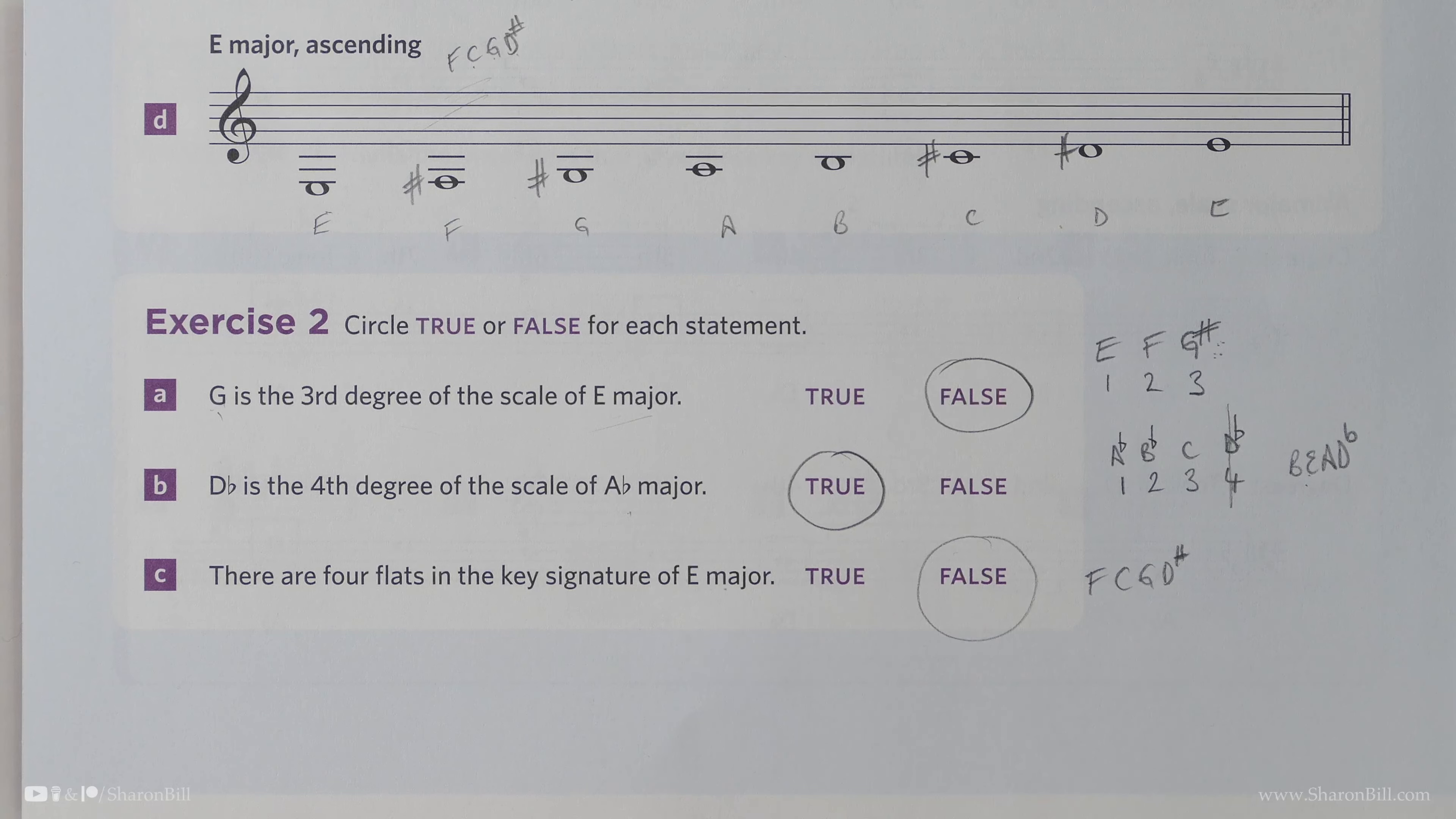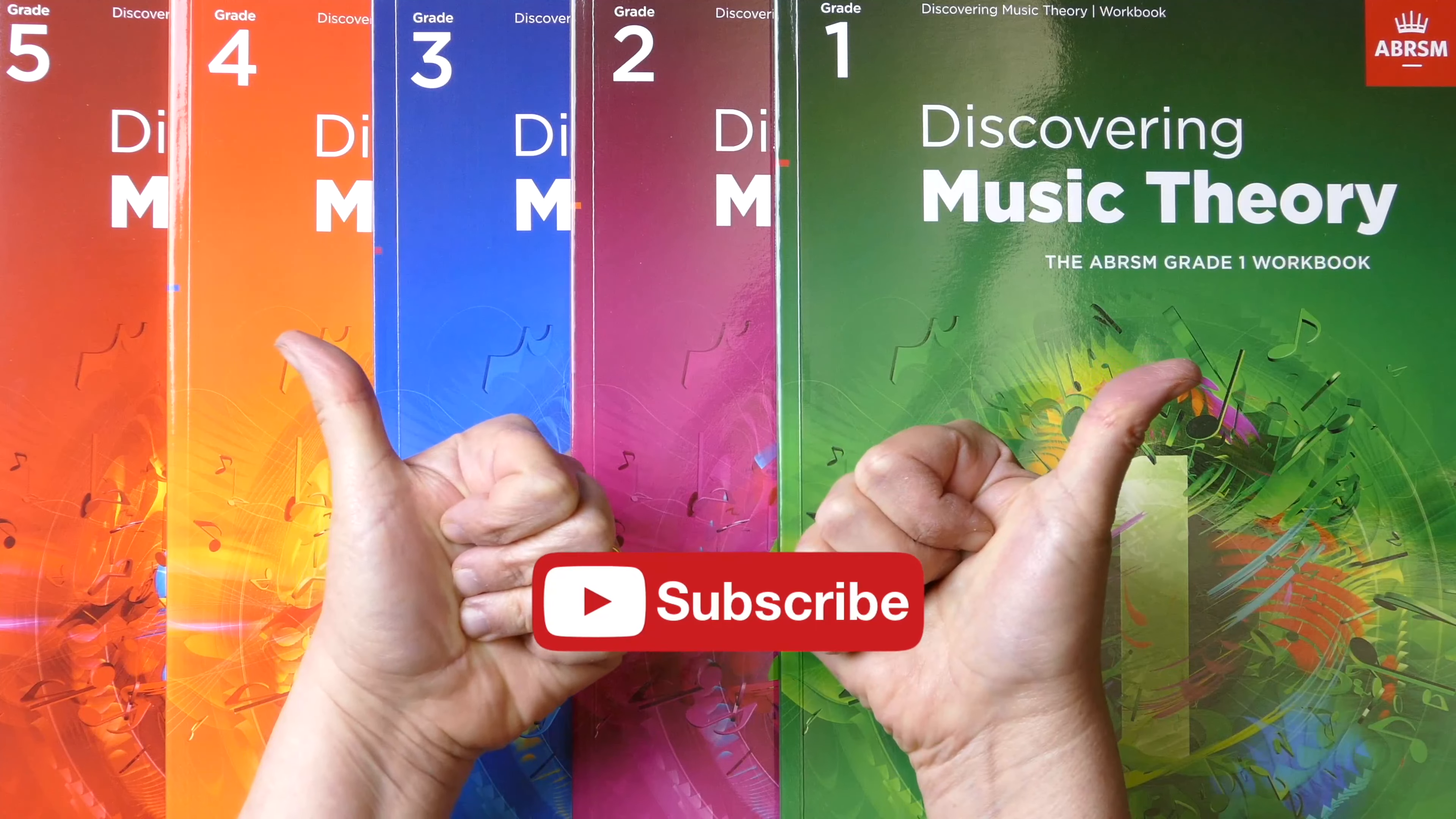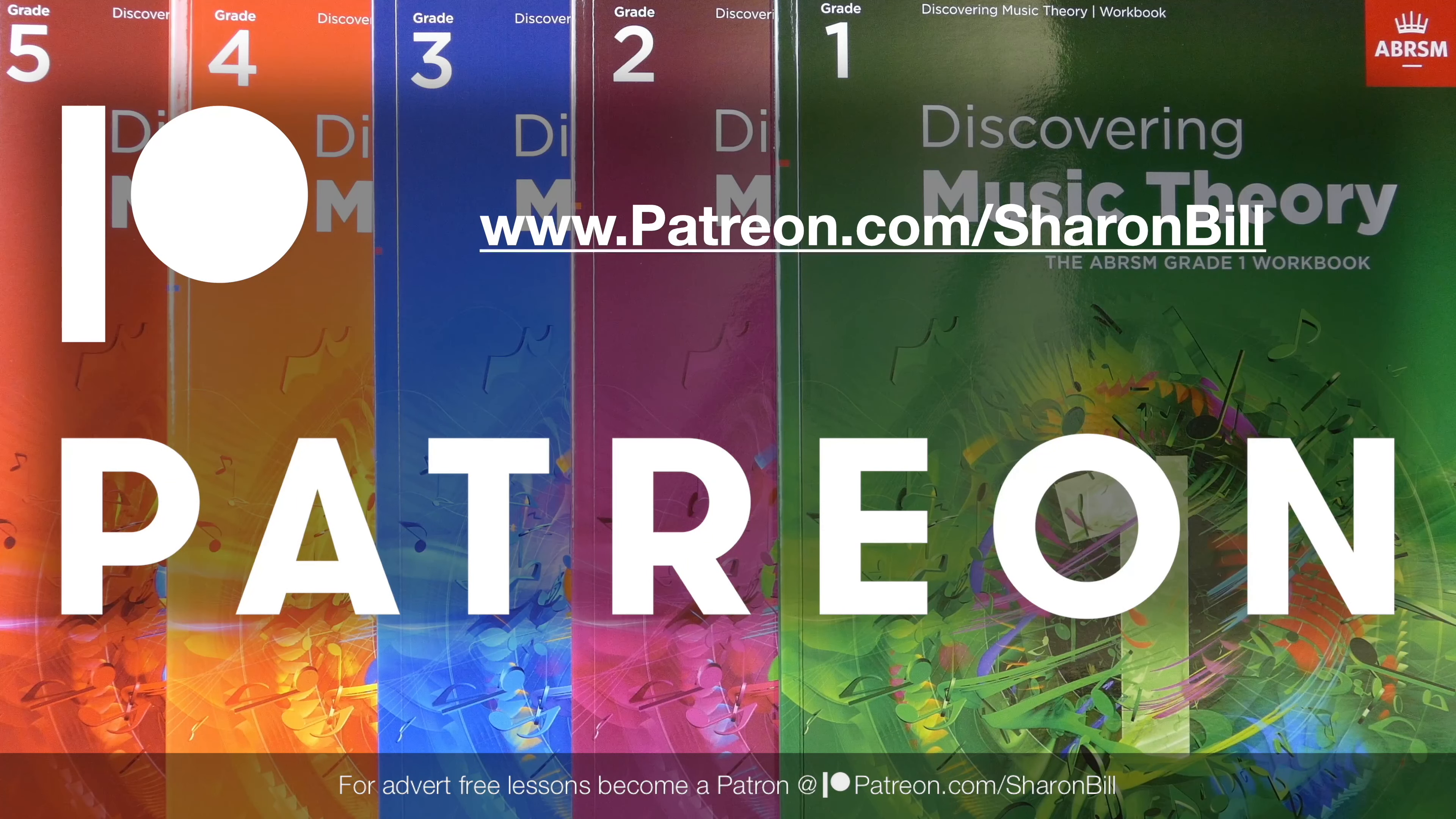Now, is it true or false that there are four flats in the key signature of E major? Well, that's false because E major has a key signature of sharps. It's got four sharps—F, C, G, D sharps, not flats. So that's a little bit of a tricky red herring question there, just to throw you a little.